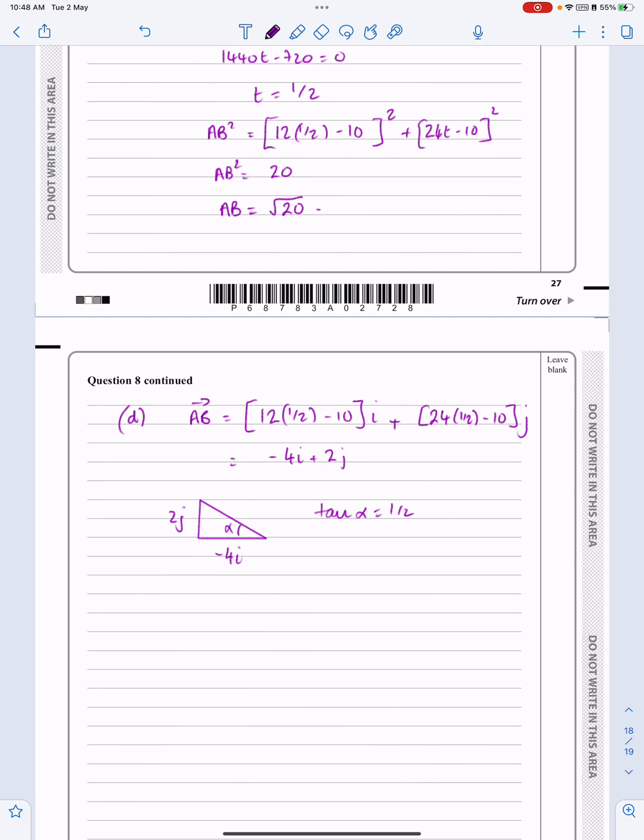And then the bearing is always measured from the north in a clockwise direction. So in this case, that's just a matter of adding bearing equals 270 added on to 26.6, which means 296.6. But we're going to call that 297 degrees. Okay. Hopefully that makes sense for the question eight.